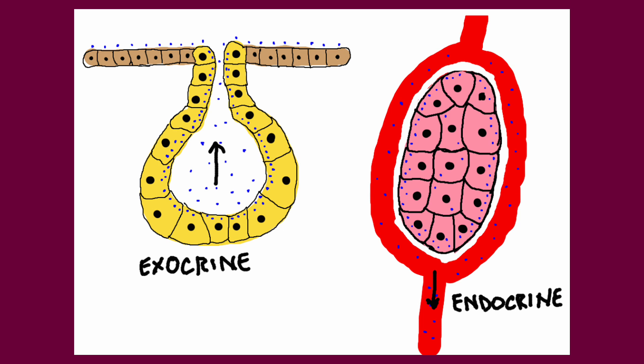Moving on to the endocrine glands. While exocrine glands distribute their products through a ductal system to a surface, the endocrine system makes substances — hormones in this case — and then transfers the hormones by way of the bloodstream. So the endocrine glands are always adjacent to capillary beds and blood vessels.